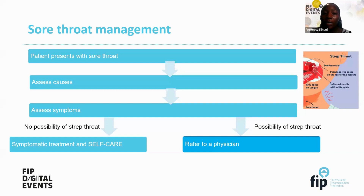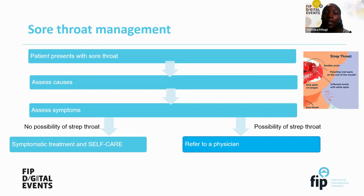Also check whether the patient has a swollen uvula, red spots in the mouth, gray spots on the tongue, inflamed tonsils, or a fever. If it is just a sore throat that is viral or due to environmental factors and there is no possibility of strep throat — no fever and no other symptoms — then these patients should be on symptomatic treatment and self-care.